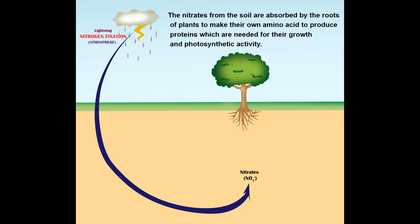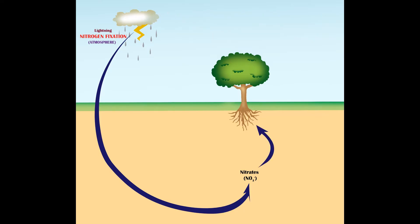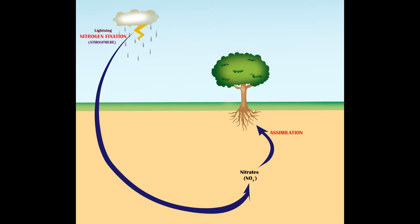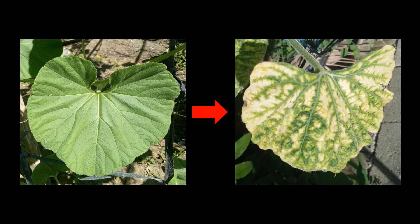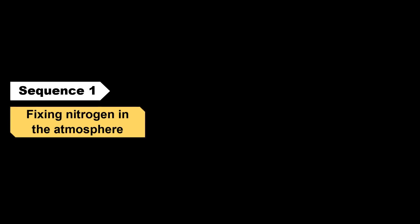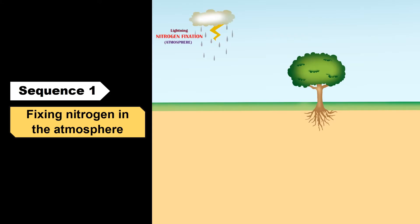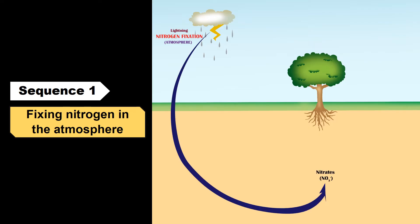Assimilation: The nitrates from the soil are absorbed by the roots of plants to make their own amino acids and produce proteins, which are needed for their growth and photosynthetic activity. This process of absorbing nitrates from the soil by the roots of plants is assimilation. Without sufficient nitrates, plants will not grow well and their leaves will turn yellow, resulting in low harvests. So, sequence 1 summarized: nitrogen fixation in the atmosphere converts nitrogen gas into nitrates through lightning, which reach the ground through rain and are assimilated by plants.